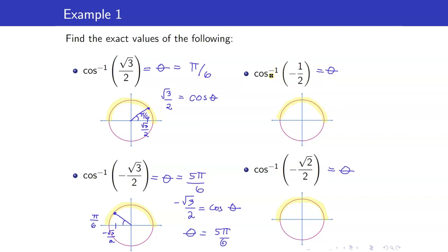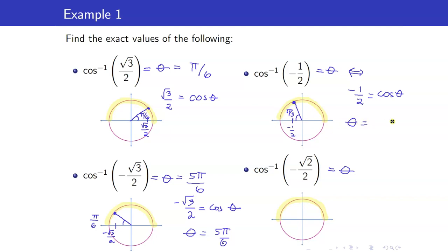For cosine inverse of negative 1 half: we look for angle theta such that cosine of theta equals negative 1 half. Negative 1 half is here, giving a tall reference angle. The reference angle must be pi over 3. Therefore, the angle is pi minus pi over 3, which equals 2 pi over 3.